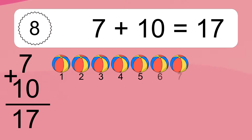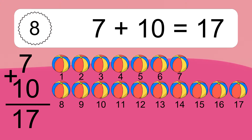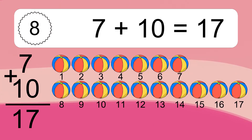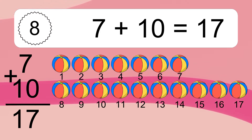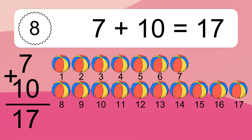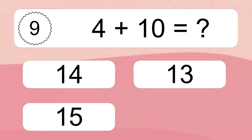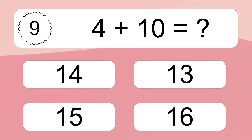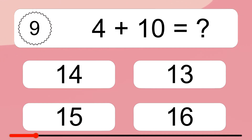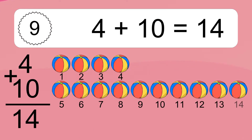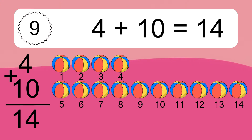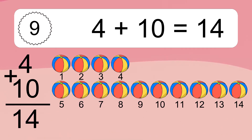1, 2, 3, 4, 5, 6, 7, 8, 9. Let's count it. 1, 2, 3, 4, 5, 6, 7, 8, 9. Let's count it. 1, 2, 3, 4, 5, 6, 7, 8, 9.